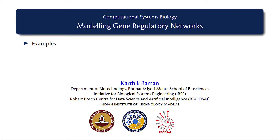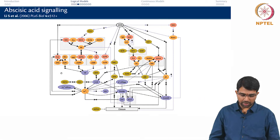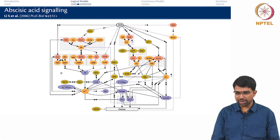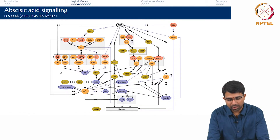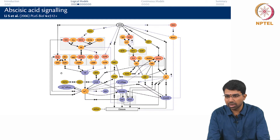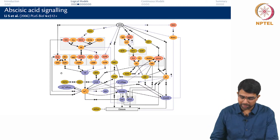We continue with modelling gene regulatory networks and will look at some simple examples like abscisic acid signalling, which is the classic example of Boolean network modelling to understand a signalling network. So let us look at more realistic examples — how do we model such systems? This looks at abscisic acid signalling; it is an important plant hormone which regulates stomatal closure.